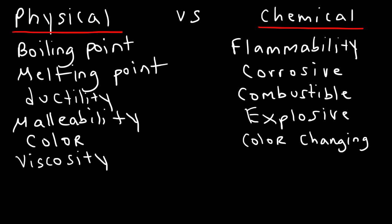Now, what about pH? Is the pH of a solution a physical property or a chemical property? pH is a chemical property. Acids tend to react with most metals, and the pH of an acid has to do with the strength of that acid. A strong acid usually has a low pH number. So, by adjusting the pH, you can affect how an acid reacts with something. Therefore, pH is a chemical property, because it's associated with a reaction.